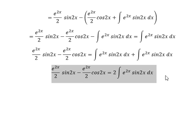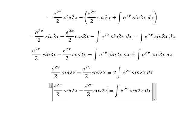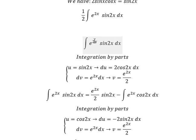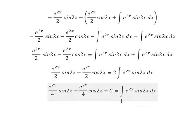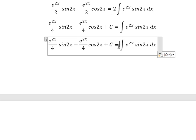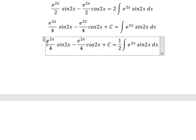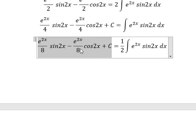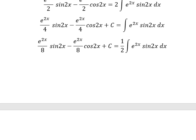So we need to divide both sides by 2, and then we add the constant C. Now we have 1/2 here, so we multiply both sides by 1/2, and this one becomes 8. C over 2 is still a constant, so we can write C. And this is the final answer for this question. This is the end. Thank you for watching.